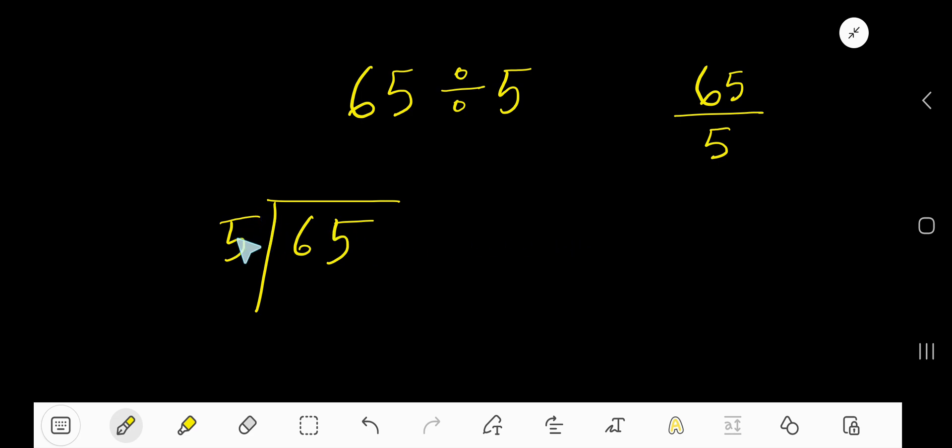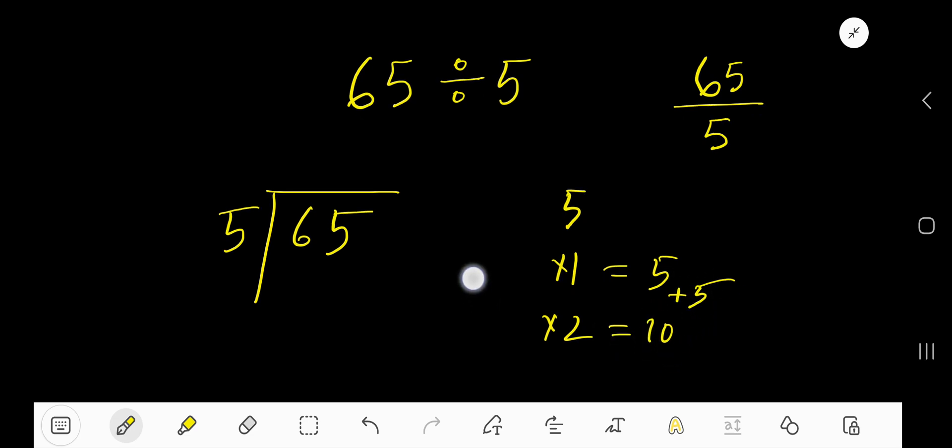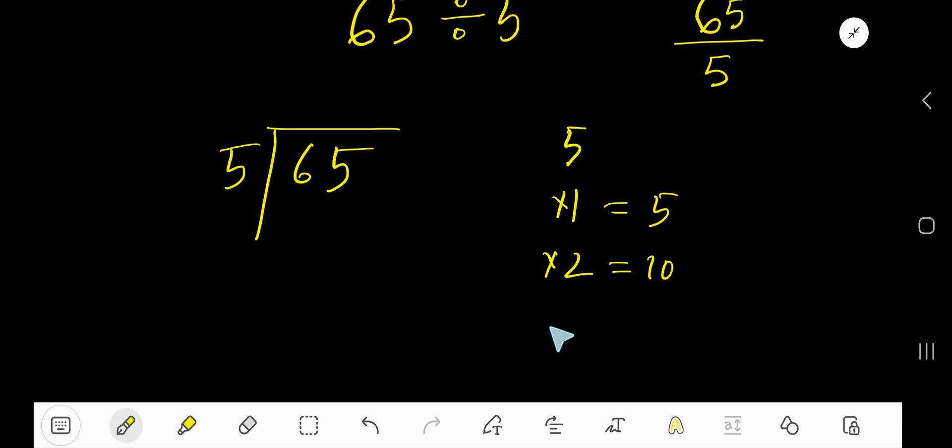5 goes into 6 how many times? We need multiplication table. Here is the quick way: 5 times 1 equals 5, times 2 just add 5 with the previous step to get 10, then 5 times 3 just add 5 with the previous step.